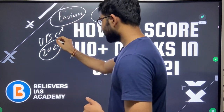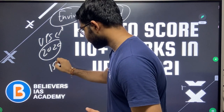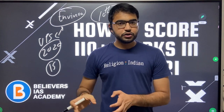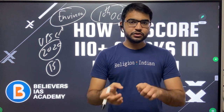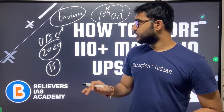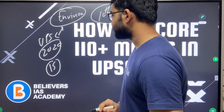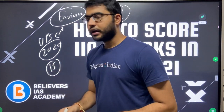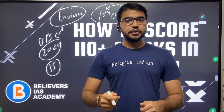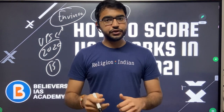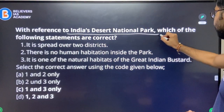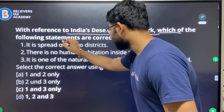UPSC asked 15 questions in the year 2020, so today we will cover all those 15 questions. We'll discuss those questions just to know what kind of questions UPSC is asking, just to assess the level of questions from environment. I'll also teach you some very important elimination techniques and intelligent guessing techniques which you can use in your examination. First question: with reference to India's Desert National Park, which of the following statements are correct? It is located in Rajasthan.